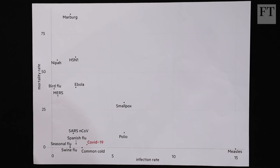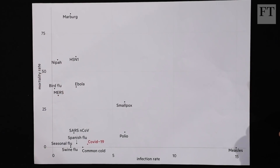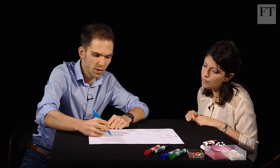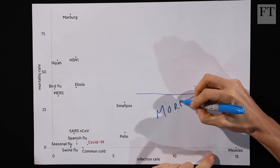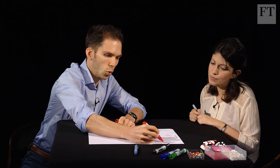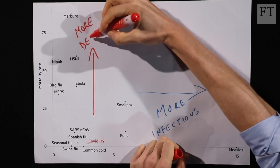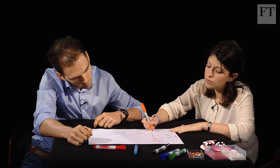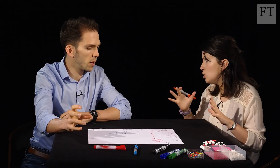The other critical factor is mortality rate — once you have the virus, what are your chances of dying? Two famous epidemics, bird flu and Ebola, sit high on the mortality axis. Moving right means more infectious; moving up means more deadly. Coronavirus, in this early stage, sits somewhere in a range on this chart — there's still uncertainty about exactly where.